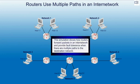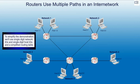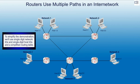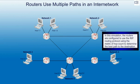This simulation shows how routers forward packets in an inner network and provide fault tolerance when there are multiple paths to the destination network. To simplify the demonstration, we'll use single-digit network IDs and single-digit host IDs in a simplified routing table. In this simulation, the routers are configured to use the RIP routing protocol using the metric of hop count to determine the best path to the destination.